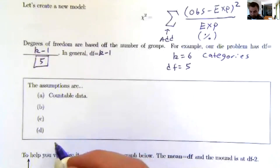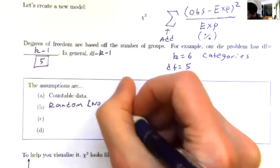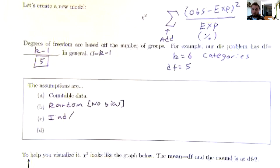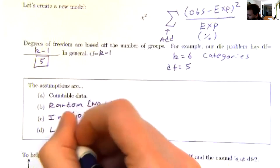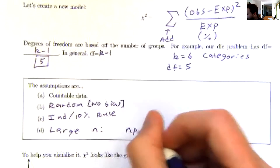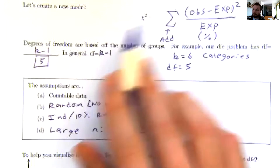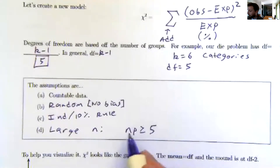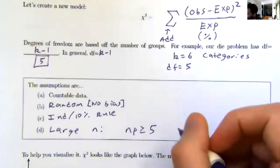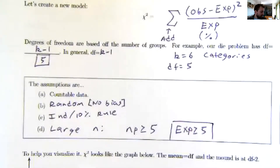The assumptions for chi-squared should look familiar. First: random—no bias. Second: one trial does not affect another; the backup for that is the 10% rule. Third: large N. Previously I needed np to be at least 10, but since we're squaring things, I can get by with considerably less—I just need to expect at least 5 in each category. Going back to our dice, I expected 11 in each category, so I'm in good shape.